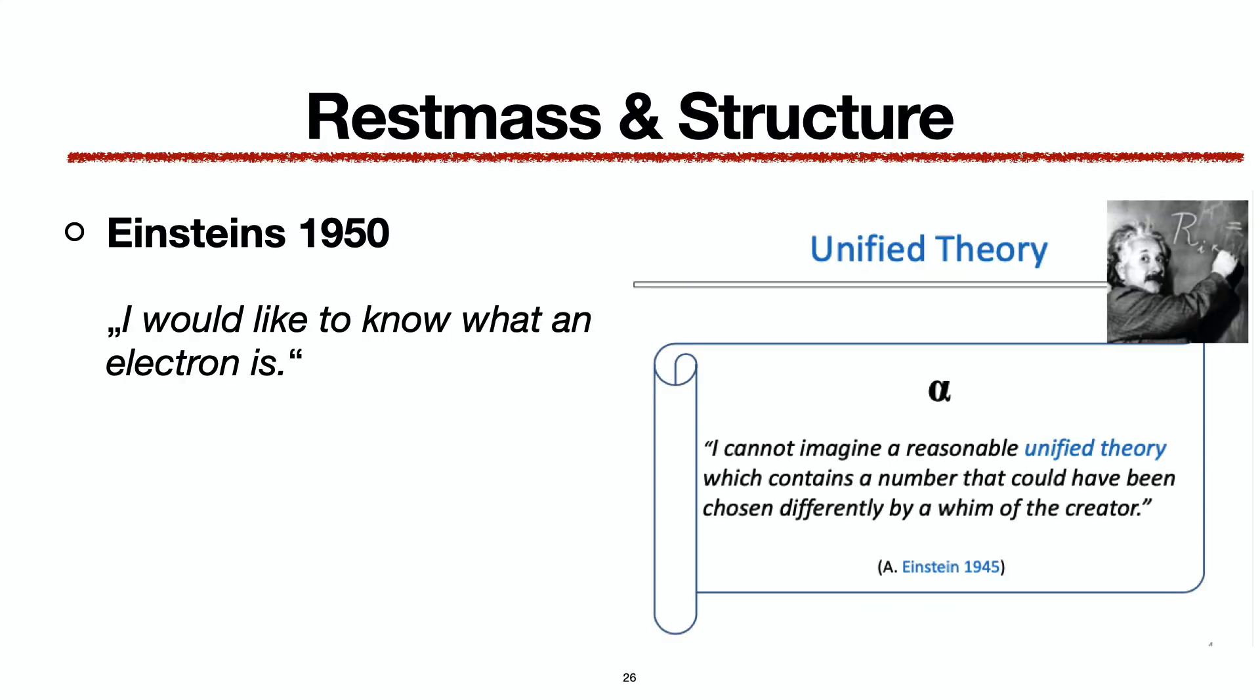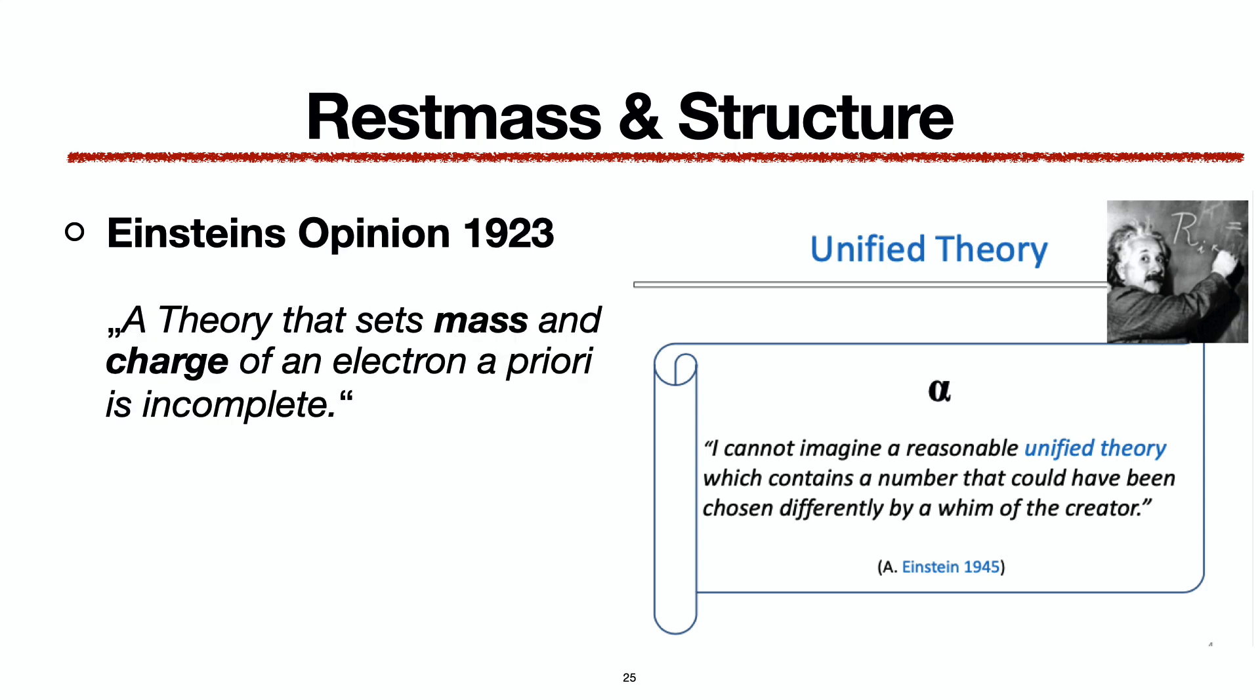I would like to know what an electron is was a legitimate question from Einstein in 1950. It is still unanswered today after 74 years. His opinion from 1923, a theory that sets mass in charge a priori, is incomplete.